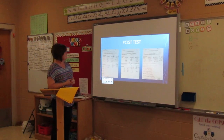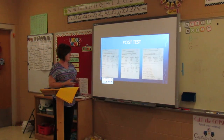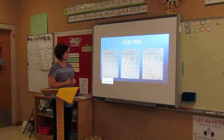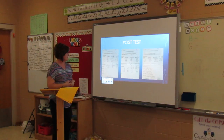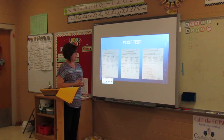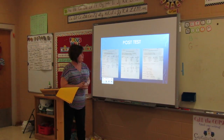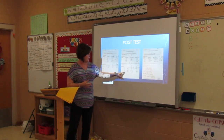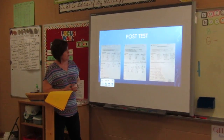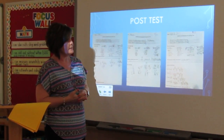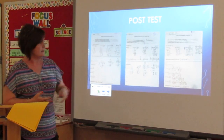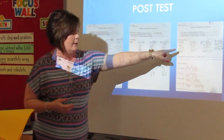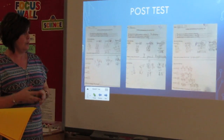Now the post-test results. Student A has shown her work and went from zero out of eleven problems correct up to five out of eleven — a good increase. Student B went from one out of eleven to six out of eleven, and you can see work is shown. Student C went from five out of eleven to seven out of eleven, and showing work where he didn't on his pretest really did help him — he just missed one of those, so that was quite a good increase.